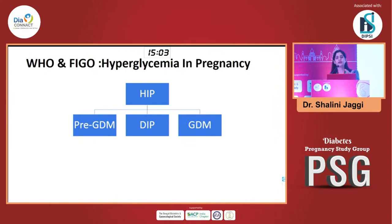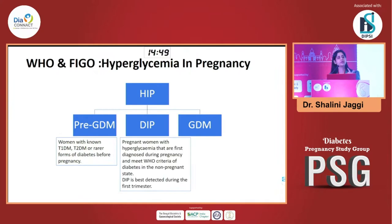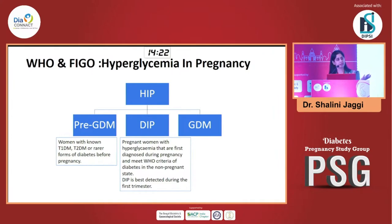FIGO has tried to make things clearer by saying pre-gestational diabetes is anyone who knows she has type 1, type 2, or any other form of diabetes and is getting pregnant. Diabetes in Pregnancy is a new term that has been introduced. This encompasses all pregnant women where hyperglycemia is diagnosed for the first time in pregnancy, but if you look at their glucose levels, they meet the diagnostic criteria of diabetes in a non-pregnant state. Diabetes in Pregnancy is best detected in the first trimester — these are essentially women who had pre-diabetes or some dysglycemia before they conceived, or probably even had diabetes and were not aware.